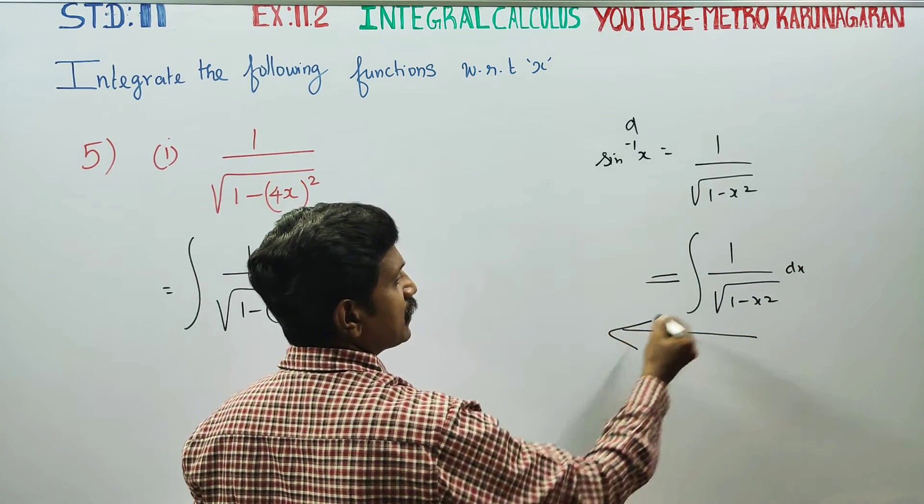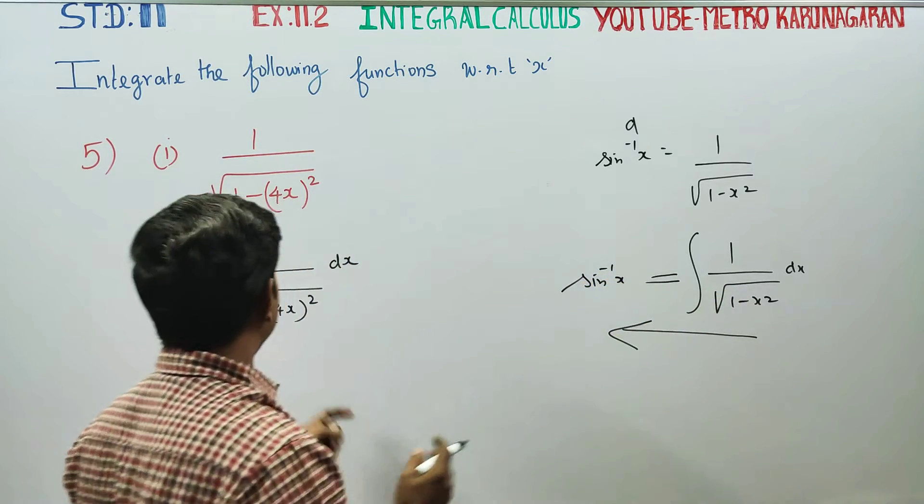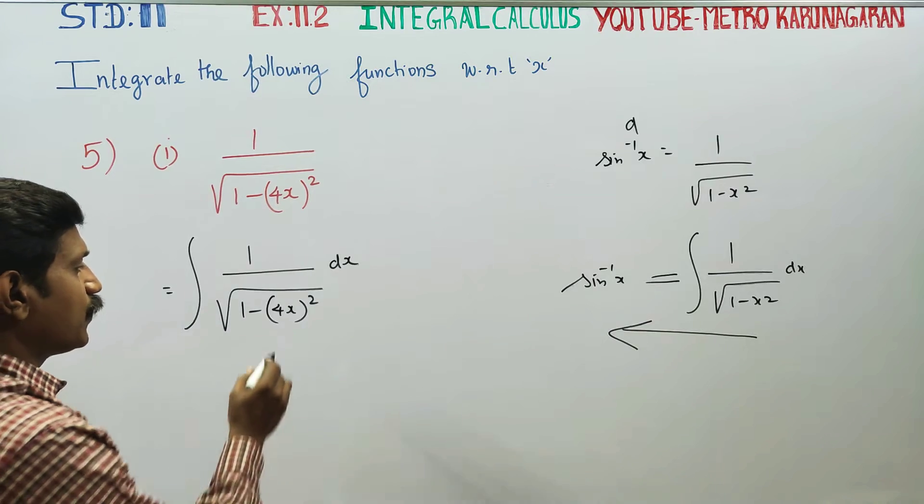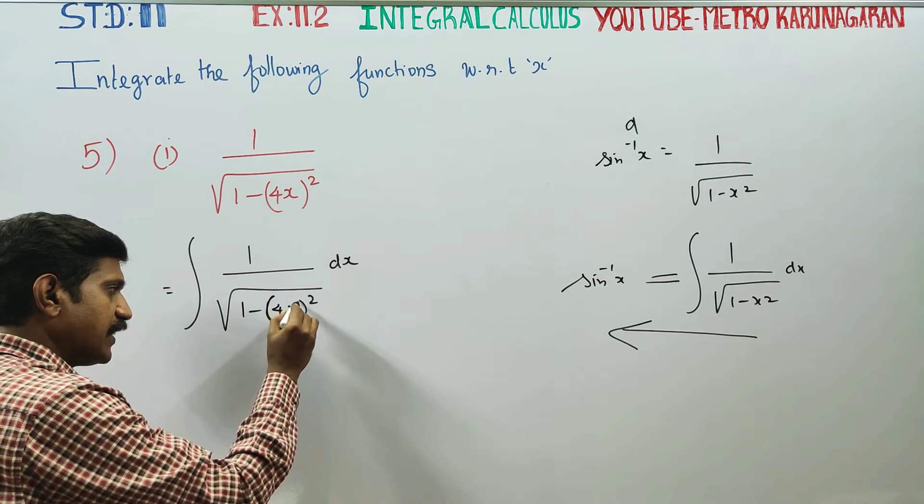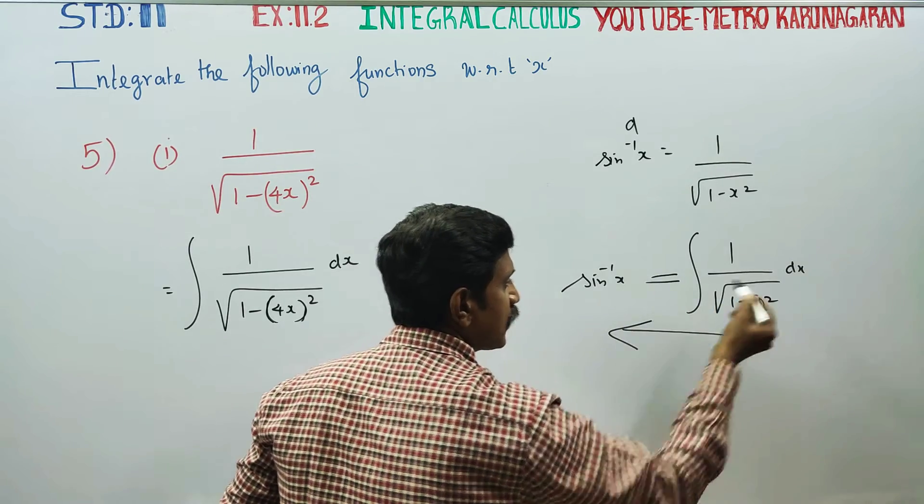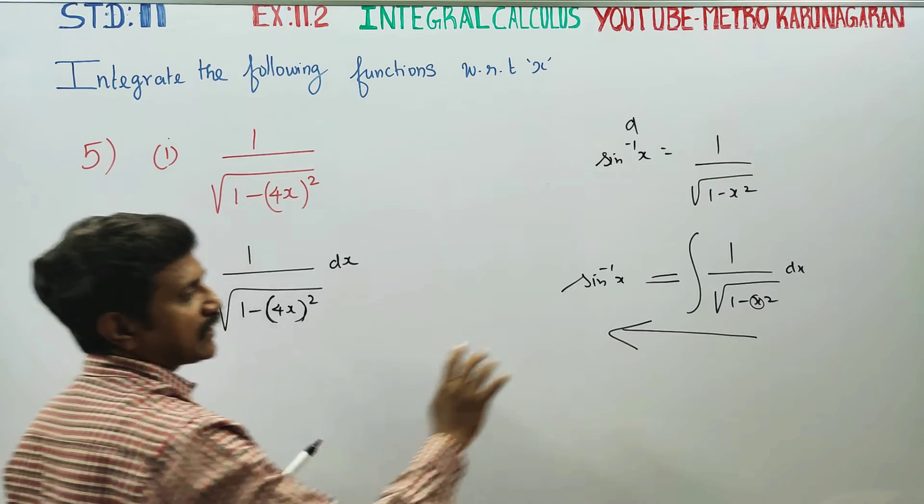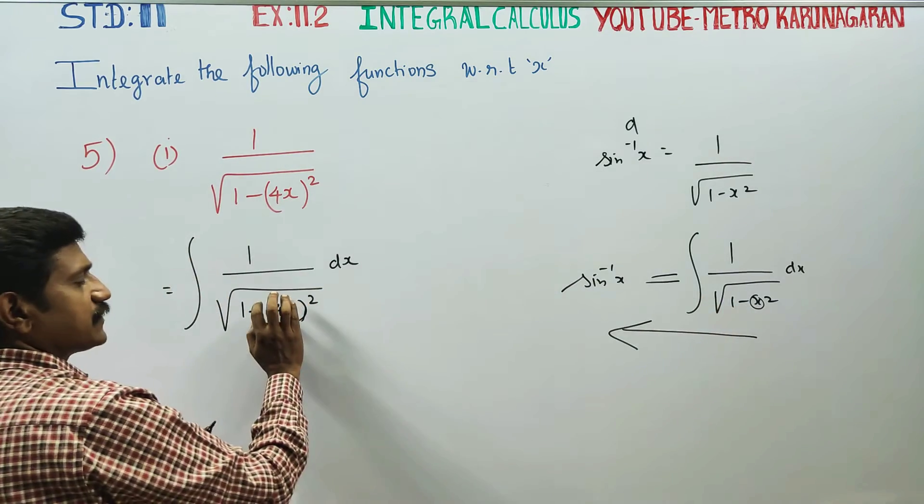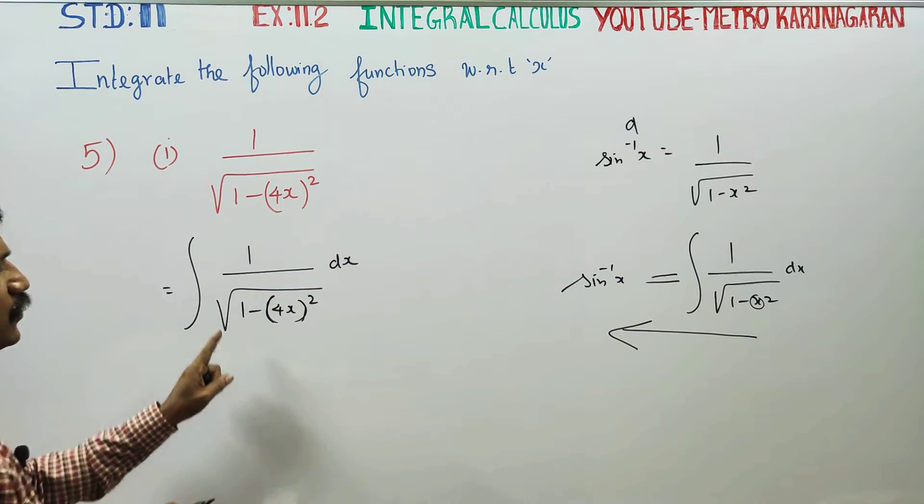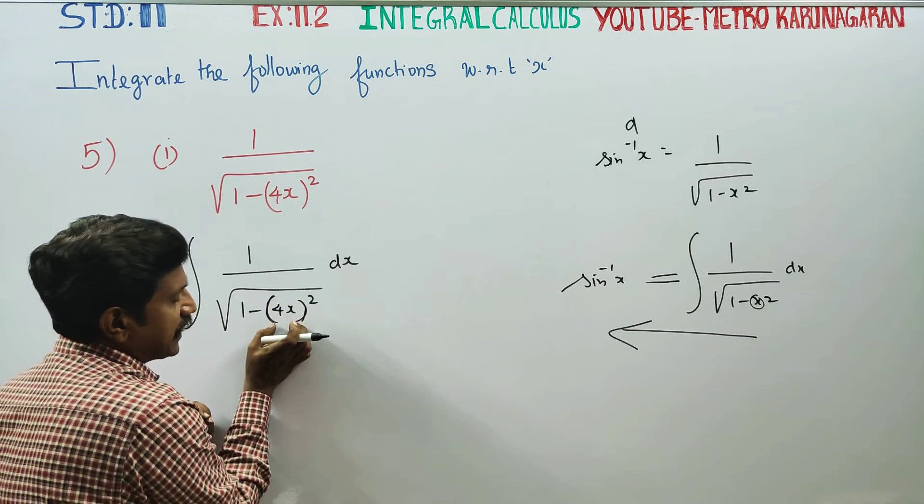Therefore, opposite of 1 by square root of 1 minus x square. 1 by square root of 1 minus 4x whole square is equal to x square.